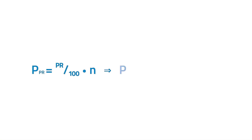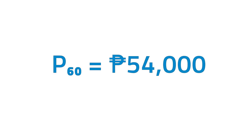Let us also find the lowest 60% from the remittances earlier. Round up 6.6 to the nearest integer, which is 7. Thus, P60 is the seventh value. 54,000 pesos divides the distribution into two parts: the lowest 60% from the highest 40%.